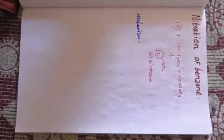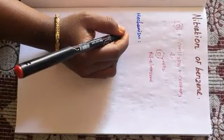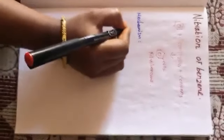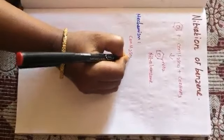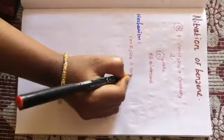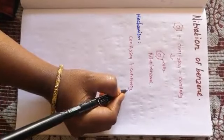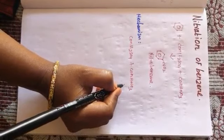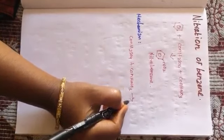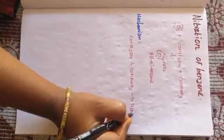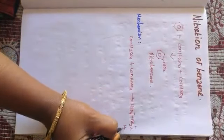Benzene is an electron-rich compound which can be attacked by an electrophile very easily. Concentrated sulfuric acid and concentrated nitric acid are called the nitrating mixture. When both react, it forms HSO₄⁻ plus NO₂⁺ plus H₂O.